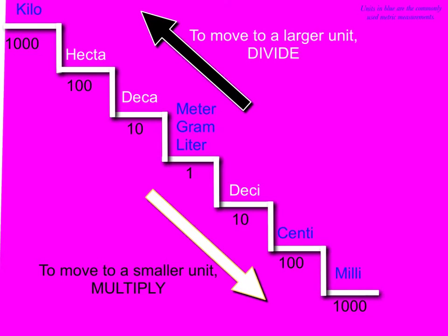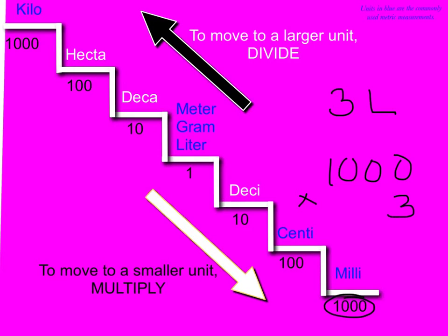Let's take a look at an example. Let's say you wanted to move from liter to milliliter. If you had three liters of liquid and you wanted to find out how many milliliters that is, you would need to multiply by one thousand, because that's what milli means, times three. One thousand times three is three thousand. You have three thousand milliliters of liquid.